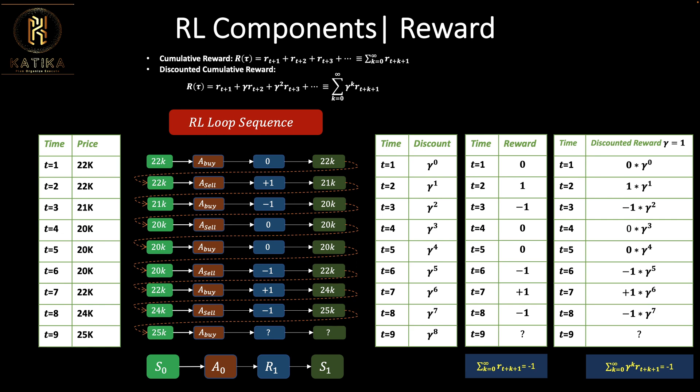So those are the fundamental components of reinforcement learning: the environment, which produces states or observations; actions, which are either discrete or continuous; and rewards, which can be cumulative or discounted cumulative. I hope you've learned something — see you in the next video.